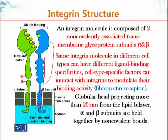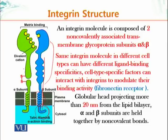Integrin molecules in different cell types can have different ligand binding specificities. Cell type-specific factors can interact with integrins to modulate their binding activity. The same integrin molecules can have different binding affinities — for example, the integrin on cell A might bind collagen, while the same set of molecules on another cell might bind a different ECM molecule such as fibronectin. This difference depends on what proteins are present in the cytoplasm, which interact with the cytoplasmic tails of these molecules and modify integrin function.